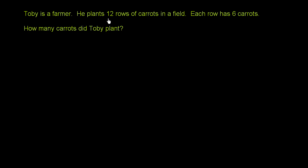Toby is a farmer. He plants 12 rows of carrots in a field. Each row has 6 carrots. How many carrots did Toby plant?